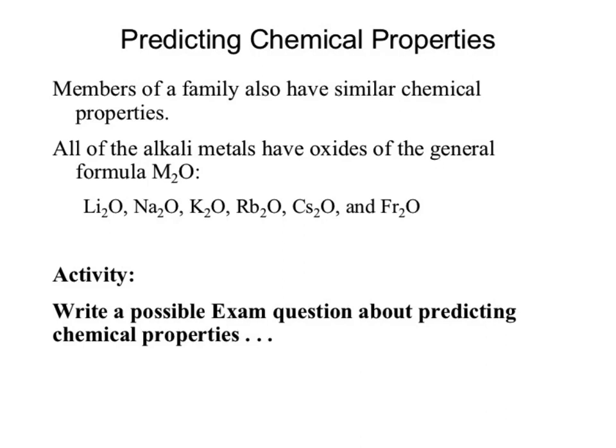So, chemical properties. Within a family, they all act the same. If I look at the alkali metals — group 1 — they all have the general formula metal₂O: I need two metals to balance out one oxygen. The oxide of lithium is Li₂O; the oxide of sodium is Na₂O. They all have that formula because they all react the same — they're in the same family.